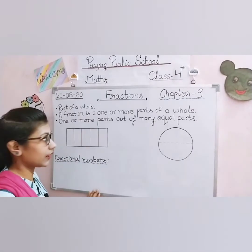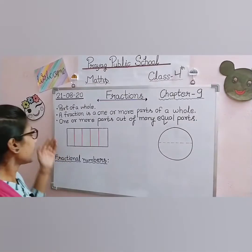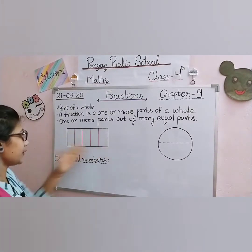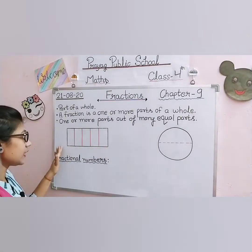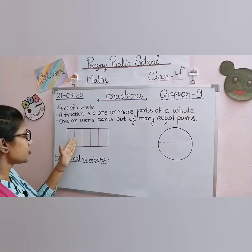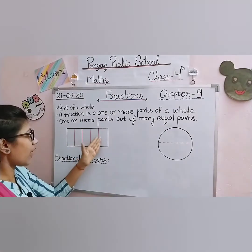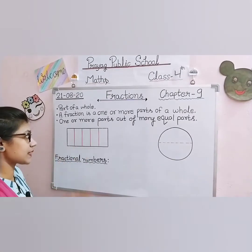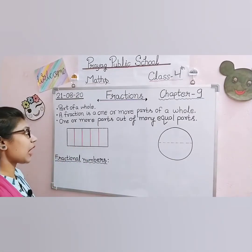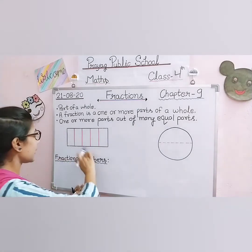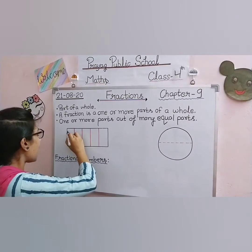Look at this example. Here is a rectangle. We have divided it into five equal parts: one, two, three, four, five — five equal parts.